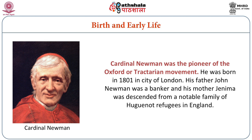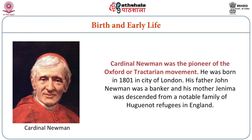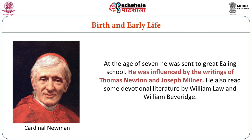Cardinal Newman was the pioneer of the Oxford or Tractarian Movement. He was born in 1801 in the city of London. His father, John Newman, was a banker and his mother, Janima, was descended from a notable family of refugees in England. At the age of seven, he was sent to Great Ealing School. He was influenced by the writings of Thomas Newton and Joseph Milner.